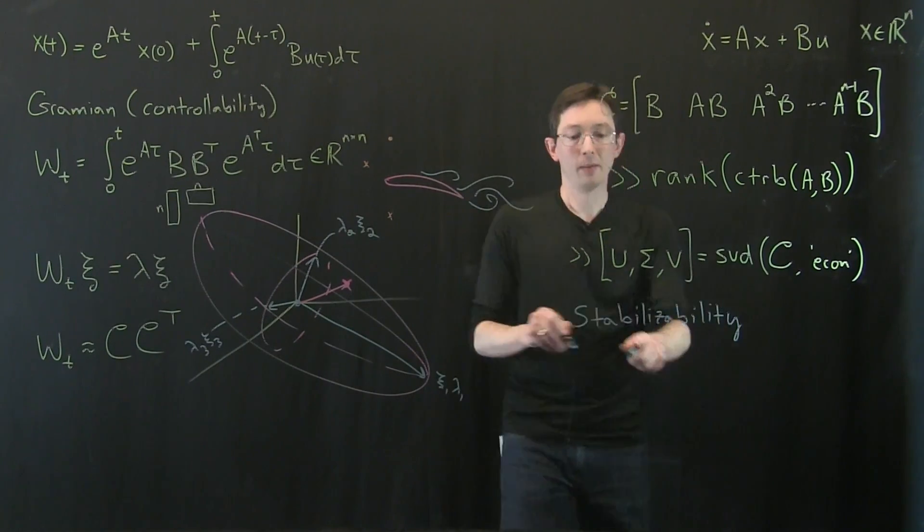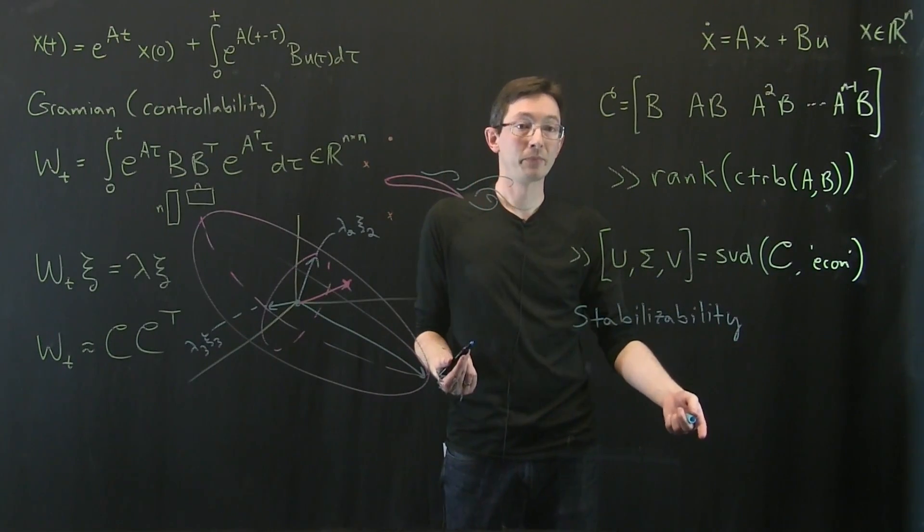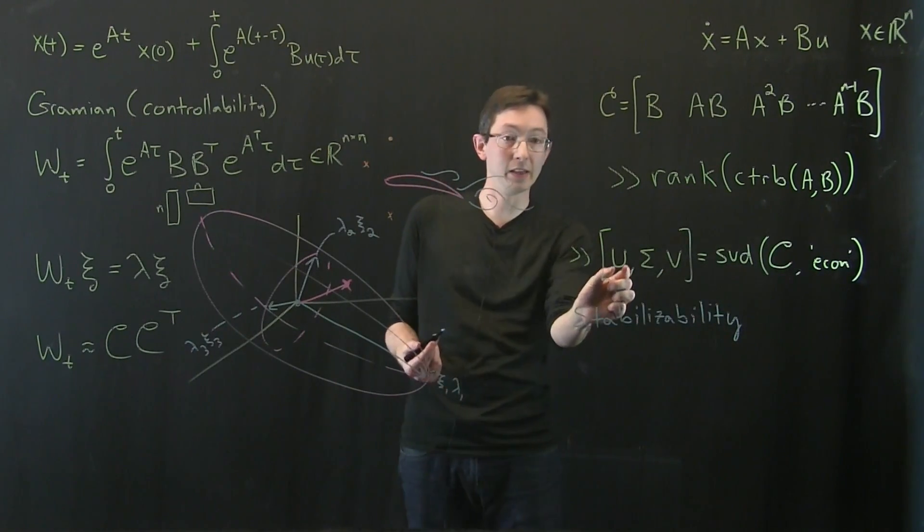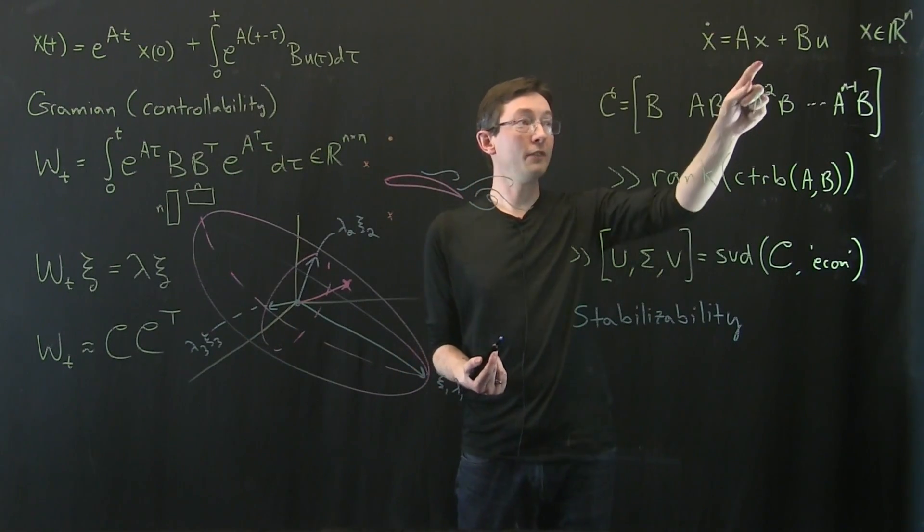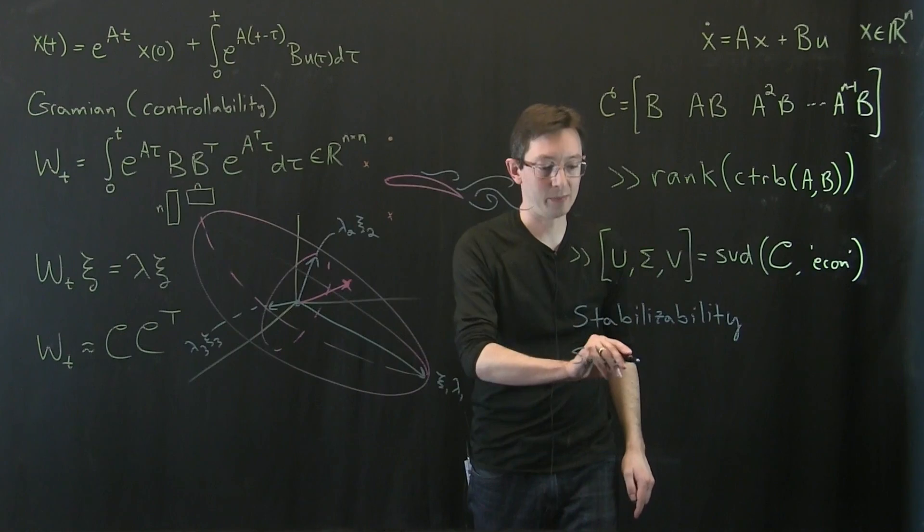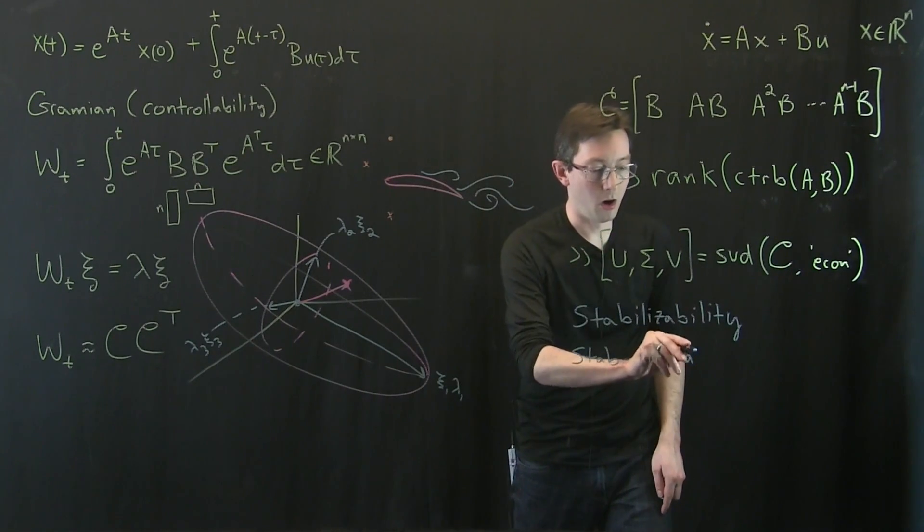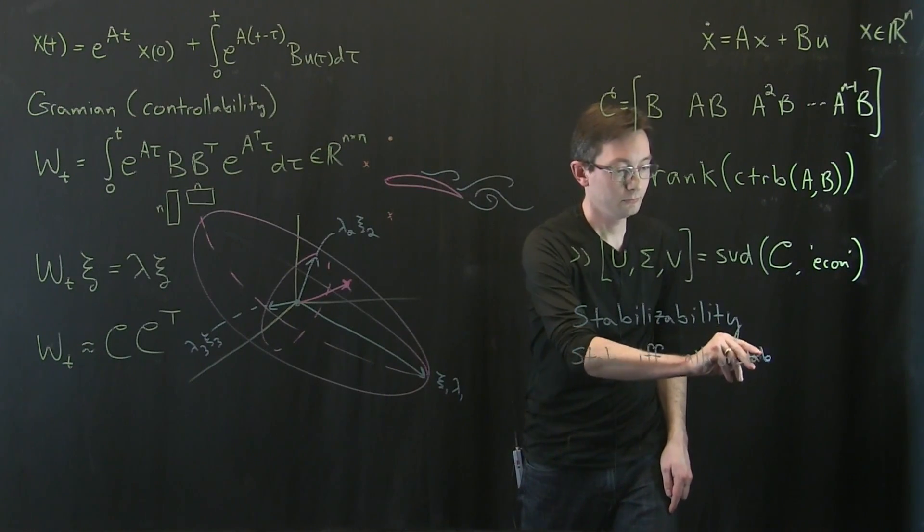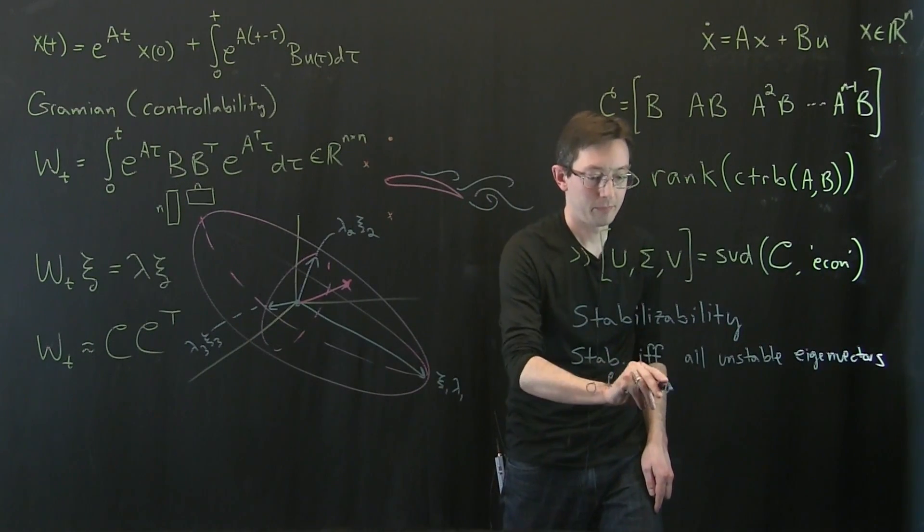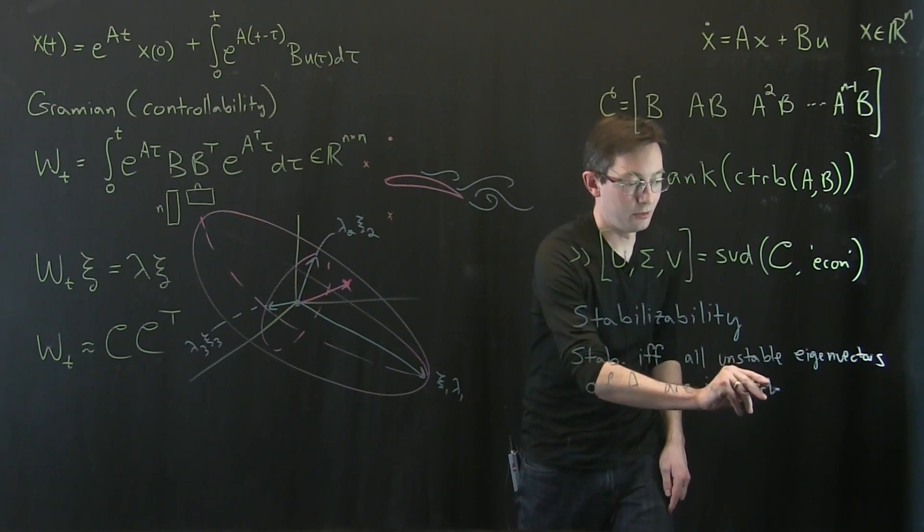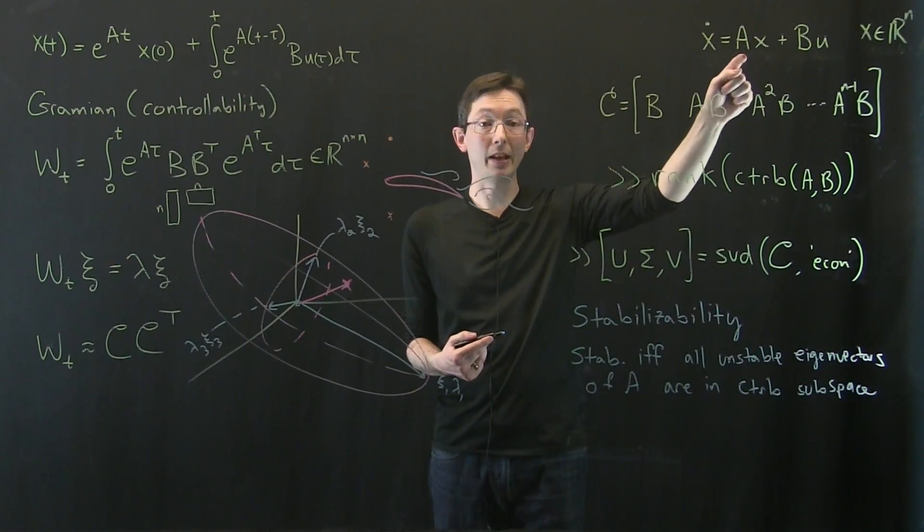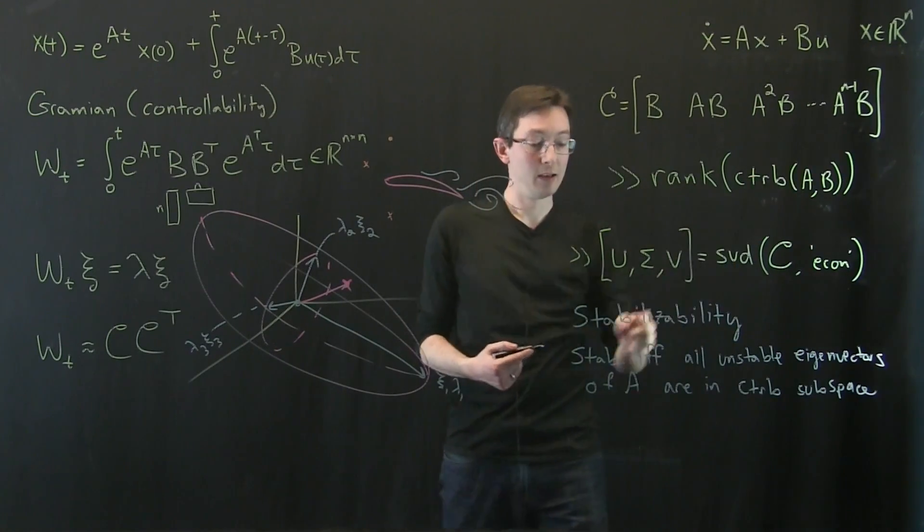And I'm doubting I'm going to spell this one right. But a system is stabilizable if all of its unstable directions are controllable. So if I look at this controllable subspace given by the singular vectors of this matrix, I want all of my unstable directions, all of the unstable eigenvectors of A. So it's stabilizable if and only if all unstable eigenvectors of A are in my controllable subspace, meaning are in the column space of this controllability matrix. If all of my unstable eigenvectors of A are in this controllable subspace, then I'm stabilizable.